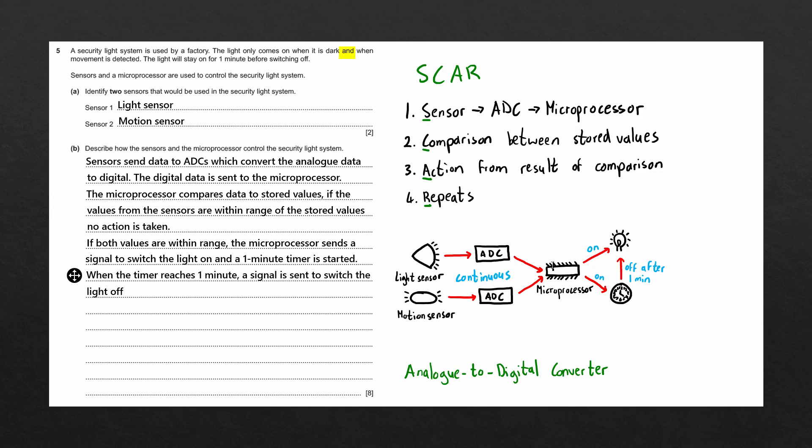Important to note that the microprocessor is sending all these signals, even though the diagram indicates that the timer is sending those signals. The last thing to mention is that the process repeats, in other words, the sensor is continuously sending data. And we can say that the whole process is continuous. And there we go, that is the 8 mark answer to complete this question.